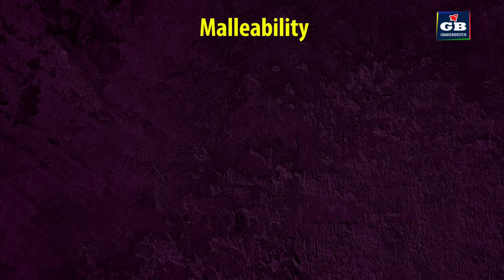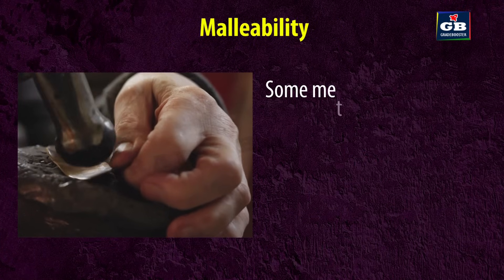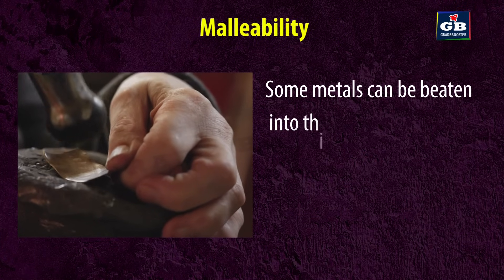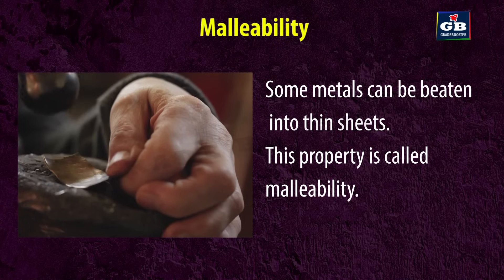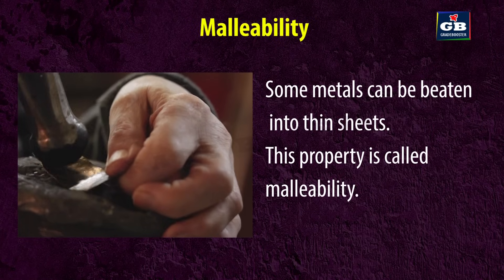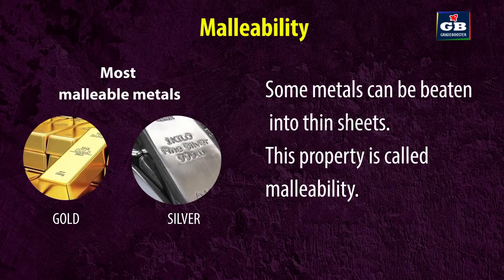Malleability. Some metals can be beaten into thin sheets. This property is called malleability. Gold and silver are the most malleable metals.